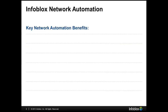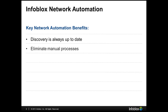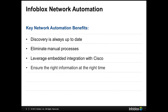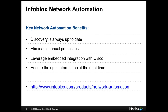A key benefit of the network automation platform includes ensuring the network discovery is always up to date and eliminating the risk caused by normal manual processes, spreadsheets, out-of-date information, and trying to track RSS feeds. By leveraging the embedded integration with Cisco, you can eliminate unnecessary vulnerabilities and reduce the risk of PSIRTs, field notices, devices with no contracts, or that face end of support and end of life issues.